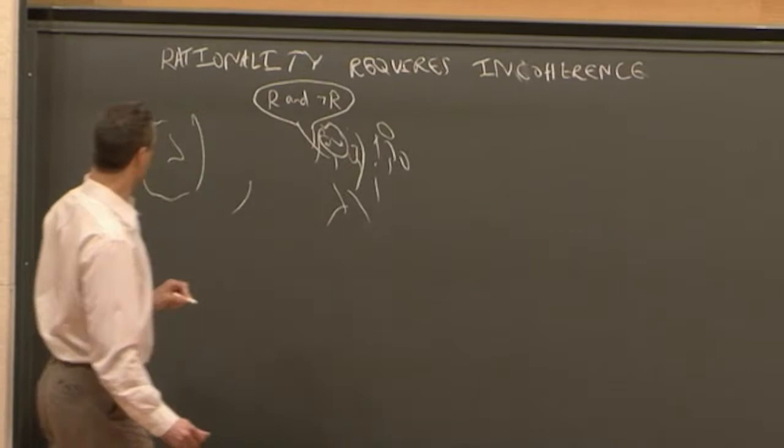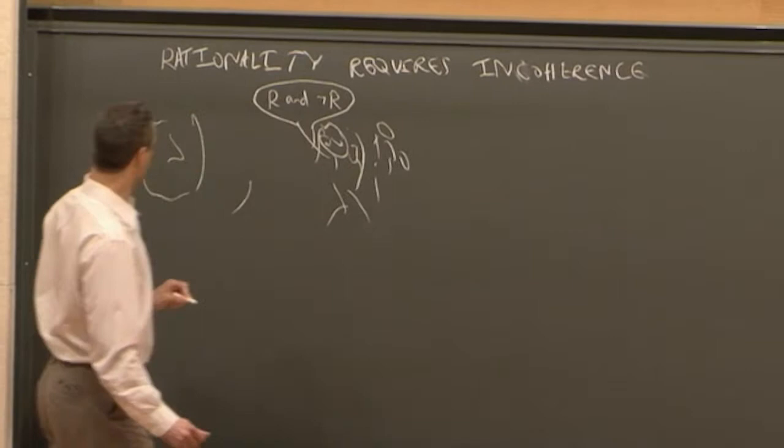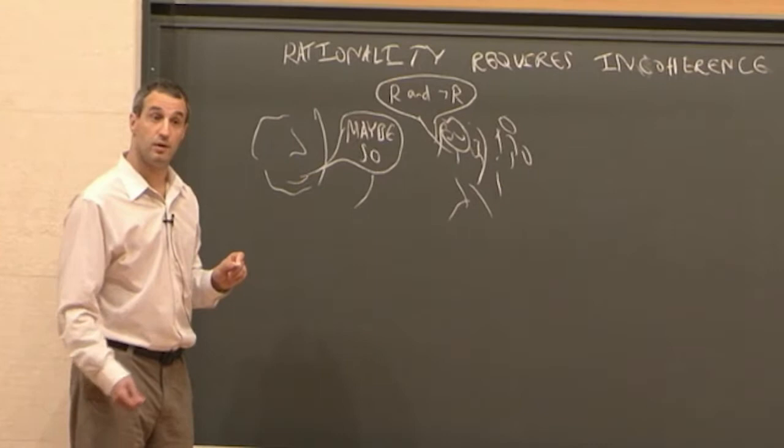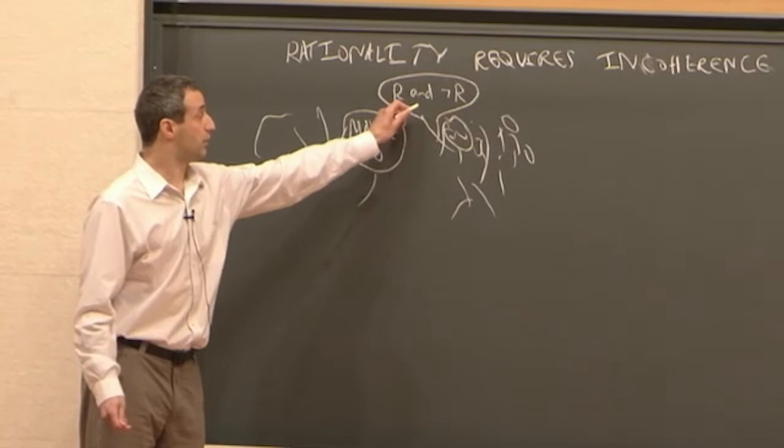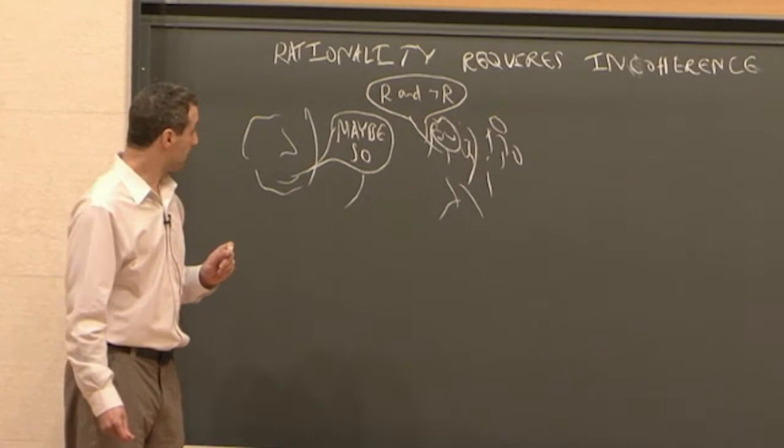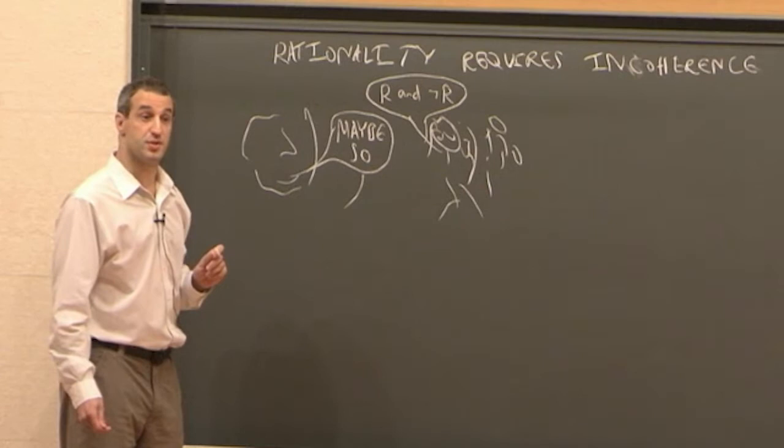Joe trusted these logicians and so responded, maybe so. And so Joe came to have some positive credence that the claim that the logicians were yelling was true. And so Joe became incoherent, since it's incoherent to put any credence in a logical falsehood.